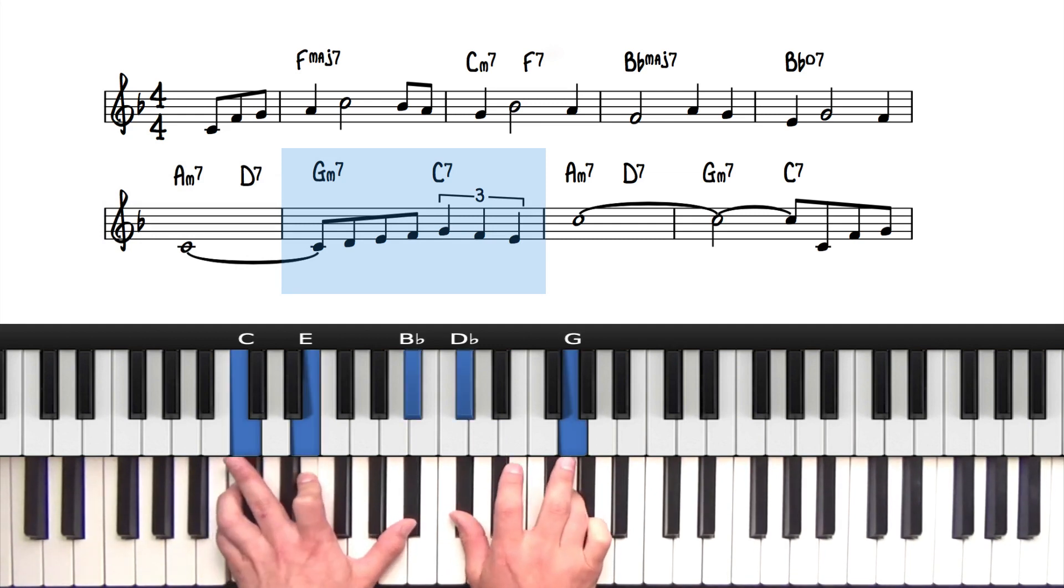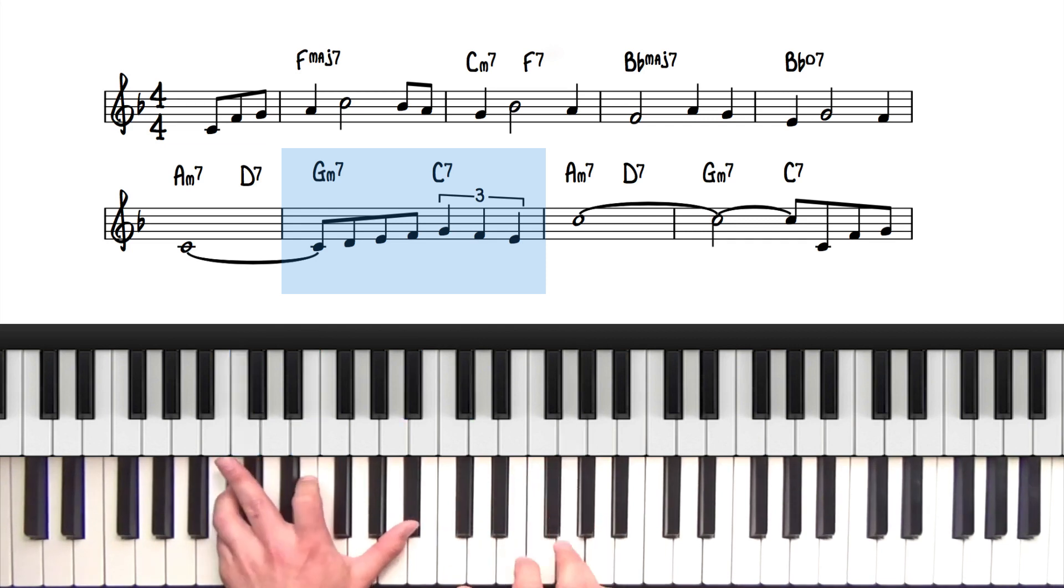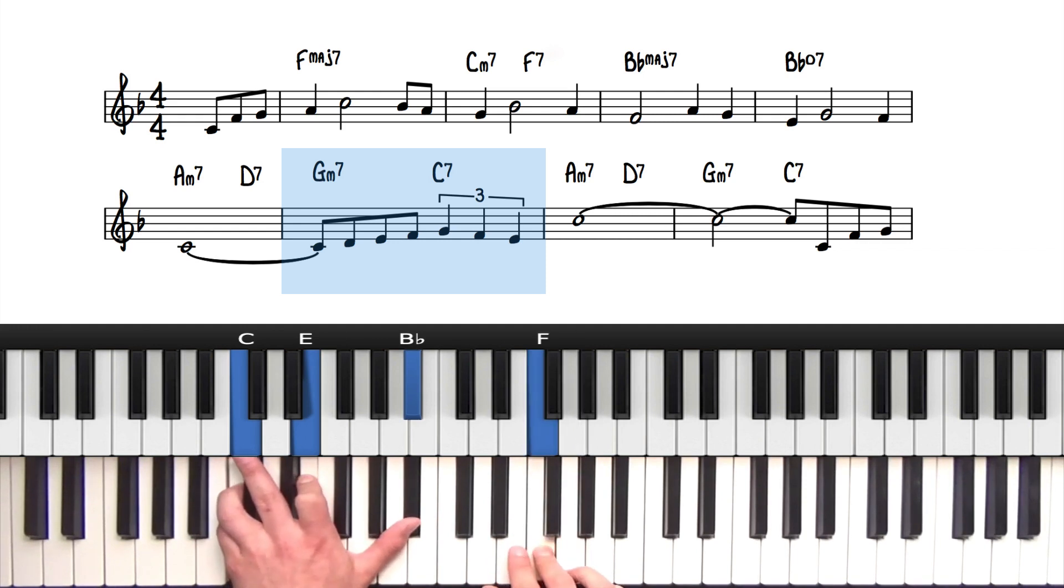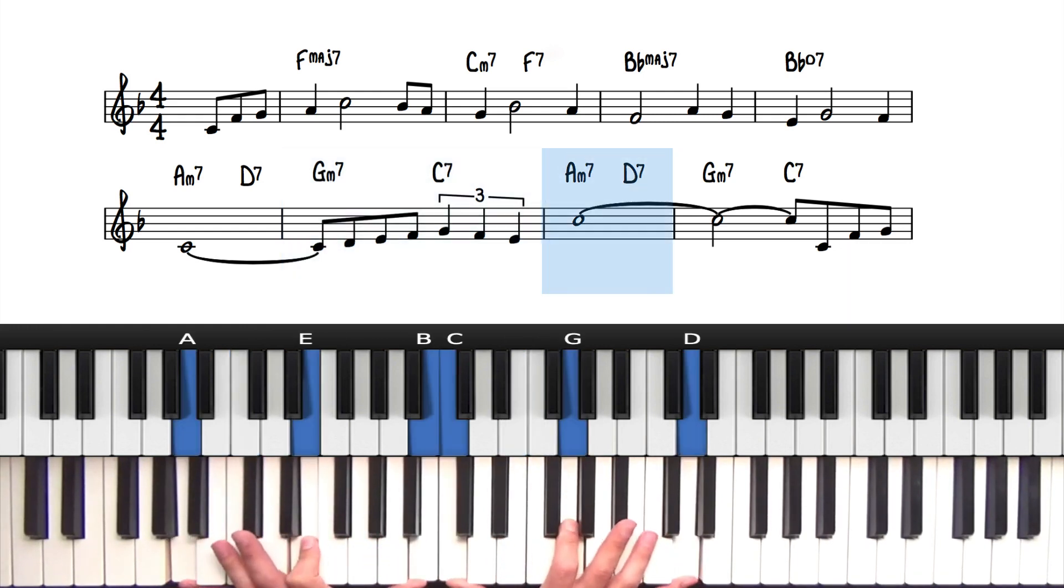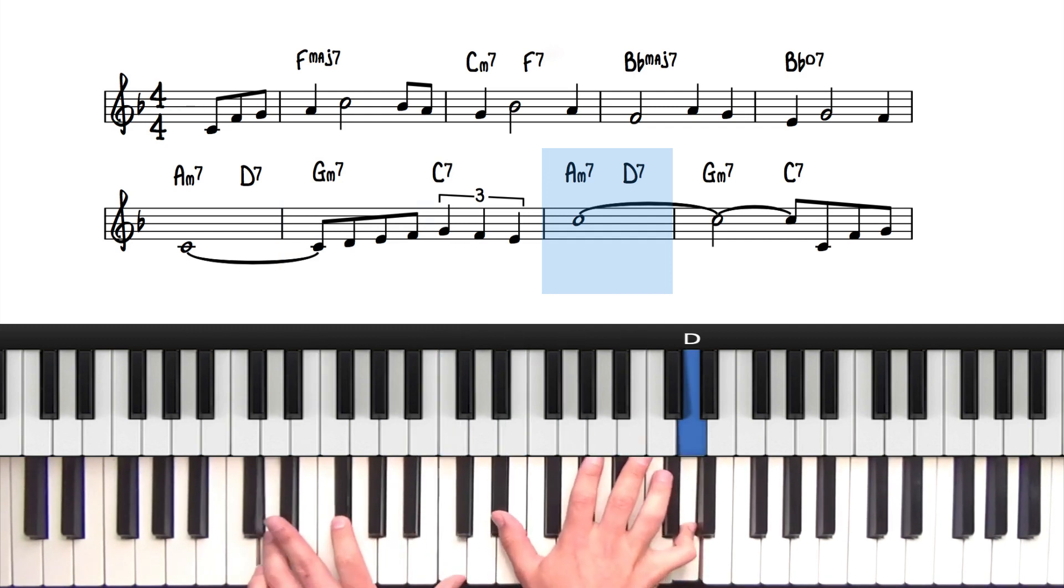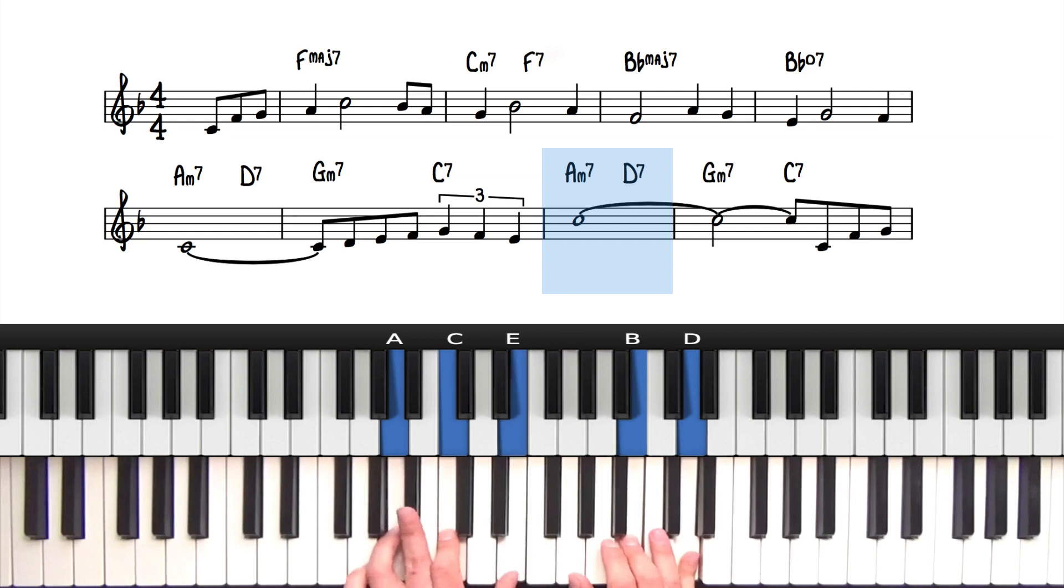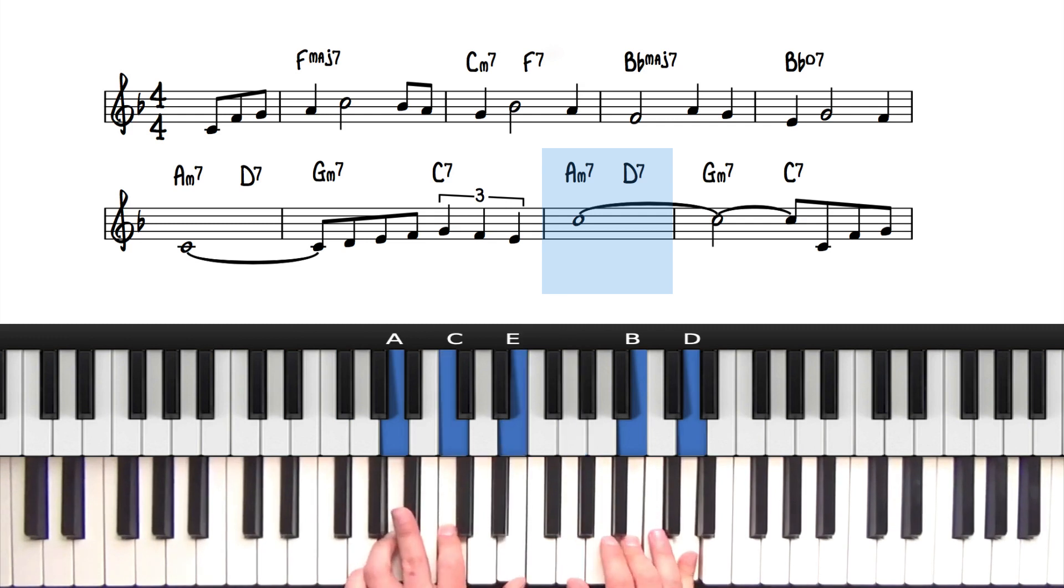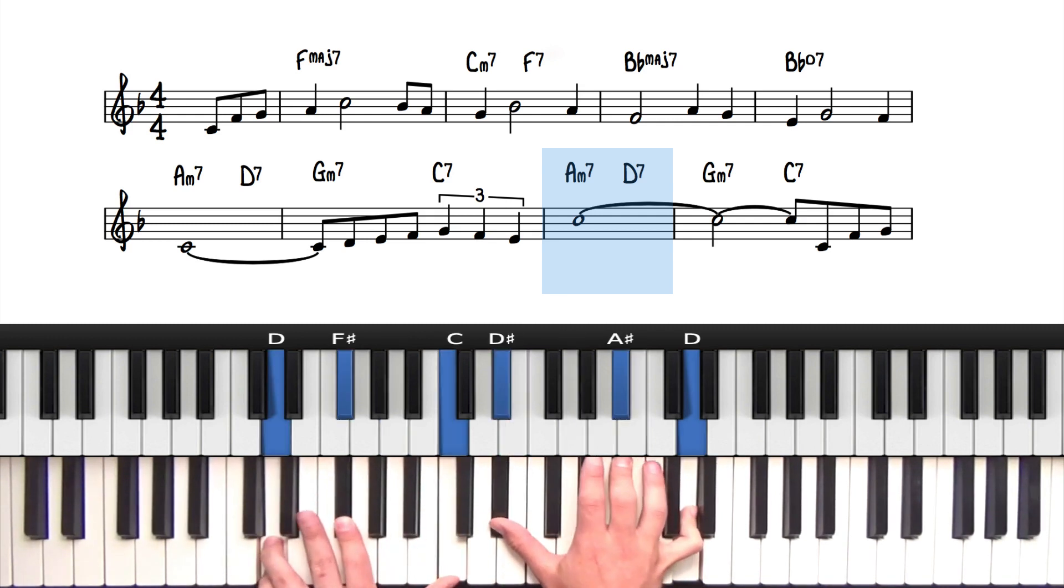So there we have a C7. We could put the flat 9 in, but sometimes we don't need to put any alterations in. Sometimes just that plain old root 3-5-7 sounds great. And we are grace noting there, so that's the sharp 11. We're going to look at that in the next practice slot. And now we have a turnaround - A minor 7. We could play it like this. And then go into a D7. So we could do flat 9, that sounds good. And we could even put the sharp 5 in there. And that sounds really good. That would be my choice there.